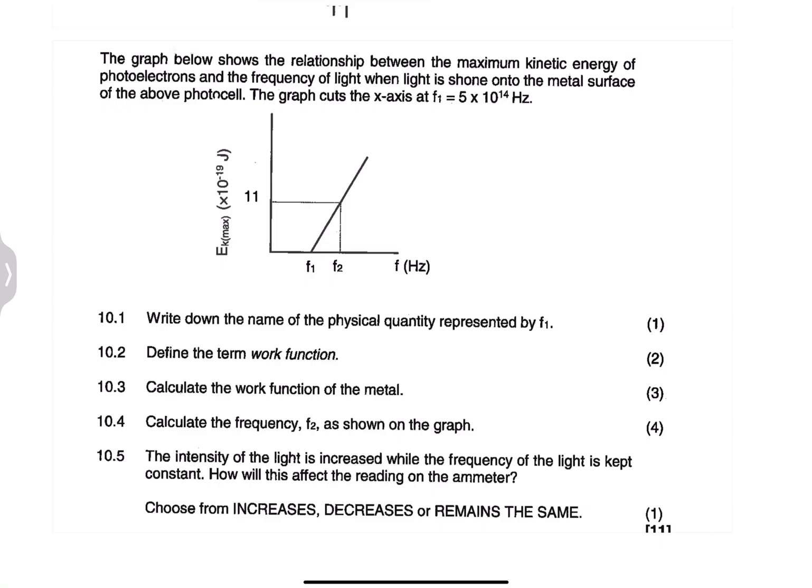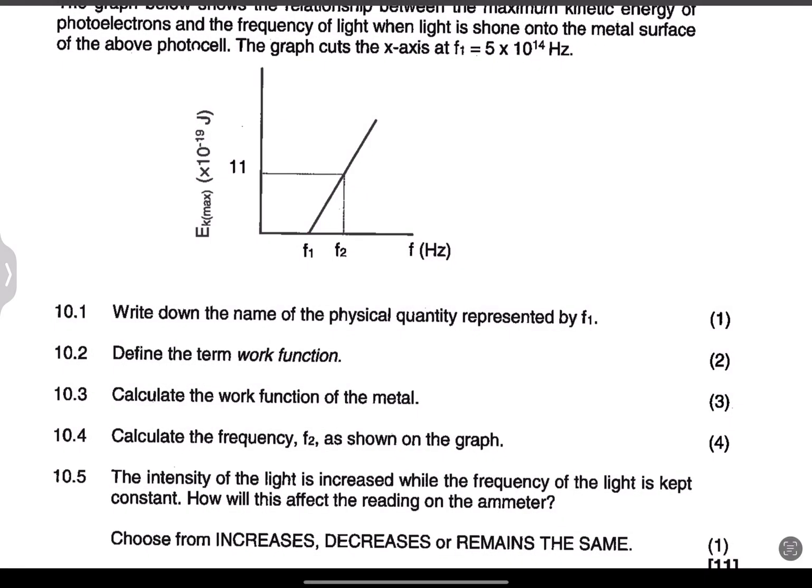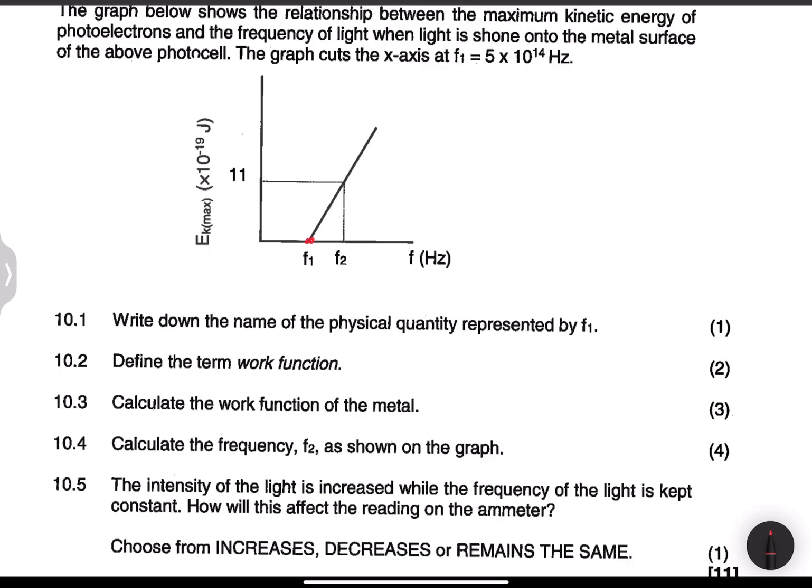So meaning that that value there, f1, is actually that frequency that's given. Now they say to us, write down the name of the physical quantity represented by f1. So please remember that when we look at this f1 value over there, this is what we call our threshold frequency. So that's the minimum frequency required, so the name of it is just simply called the threshold frequency, or you can simply call it the cutoff frequency.